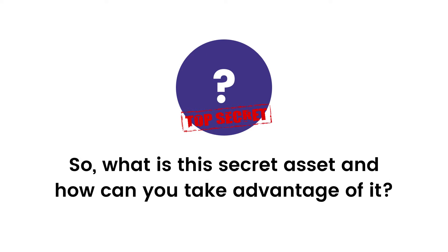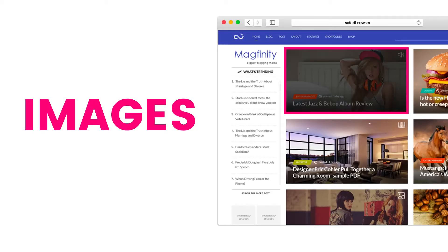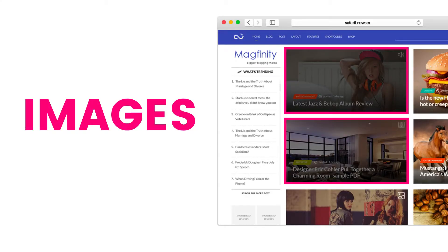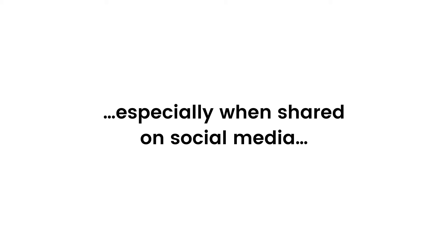So what is the secret asset and how can you take advantage of it? The key to unlocking an avalanche of traffic has to do with the images you already have on your blog. It's these images that can create viral traffic that floods your blog, especially when shared on social media.